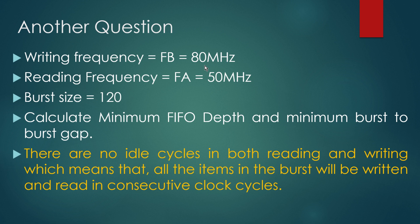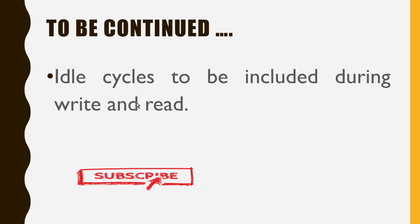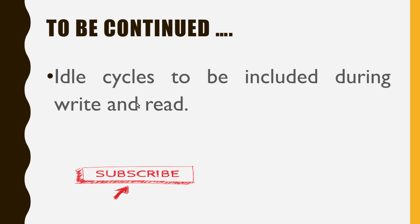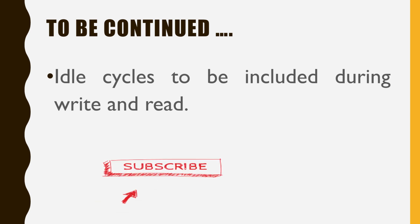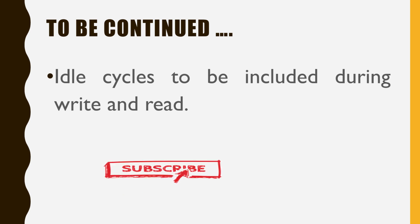Here is an exercise question: writing frequency FB = 80 MHz, reading frequency FA = 50 MHz, burst size = 120 bytes. You have to calculate the minimum FIFO depth and minimum burst-to-burst gap. Please share your answers in the comments below and I will reply whether they are correct. With this I am closing this session, but we will continue with another session that includes idle cycles during write and read. Please subscribe and press the bell icon for notifications. Thank you for watching!